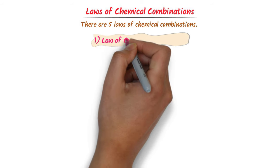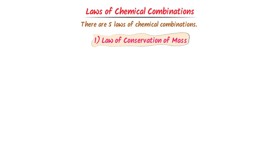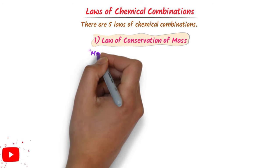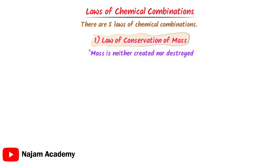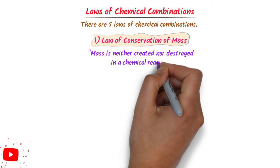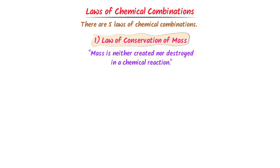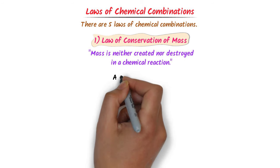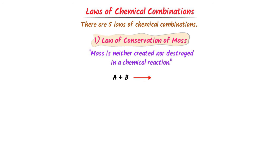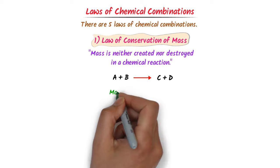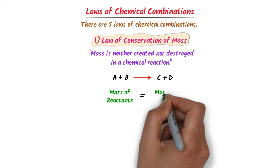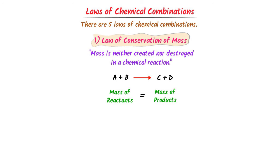The first law is the law of conservation of mass. It states that mass is neither created nor destroyed in a chemical reaction. For example, consider a general chemical reaction: A plus B react together to form C plus D. According to the law of conservation of mass, the mass of reactants A plus B is equal to the mass of products C plus D.